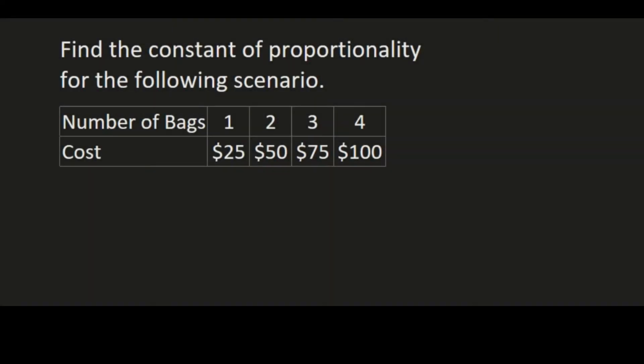In this example, we're going to find the constant of proportionality for the following scenario given in a table. If you're flying on an airline, this is the cost for the number of bags that you are checking. One bag costs $25, two costs $50, and so on. We need to find the constant of proportionality.